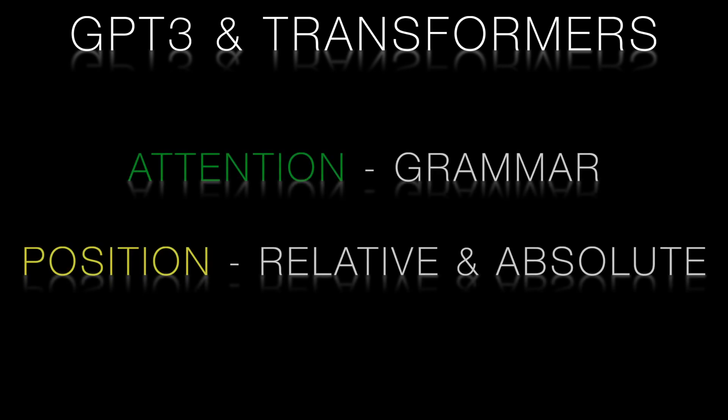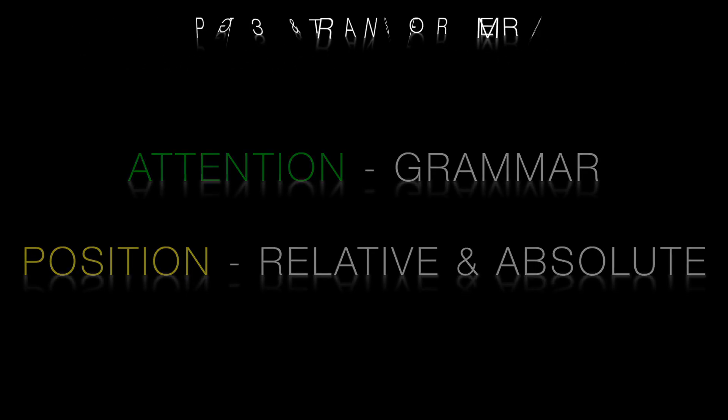But the semantic encoding on its own is not sufficient. Transformers provide two other word encodings to generate better results. One is called attention, which is loosely modeled on grammar. The other is position - that is to say, where a word appears in a sentence as well as where it appears relative to other words in a sentence. For the remainder of this video, we will focus on position.